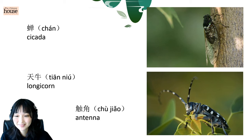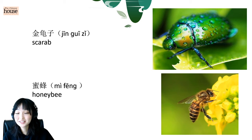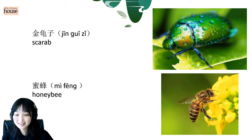And there, antenna. 触角. 触角. 触角. Next one. Scarab. 金龜子. 金龜子. Nice. Honey bee. 蜜蜂. 蜜蜂. Very good.